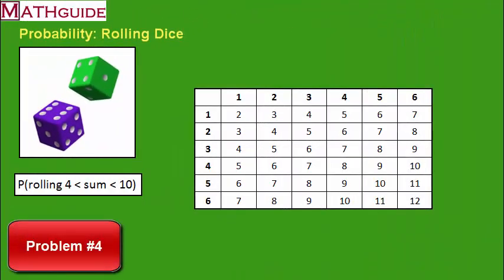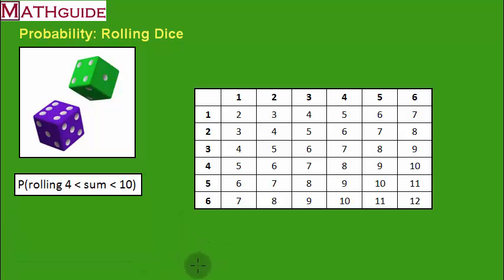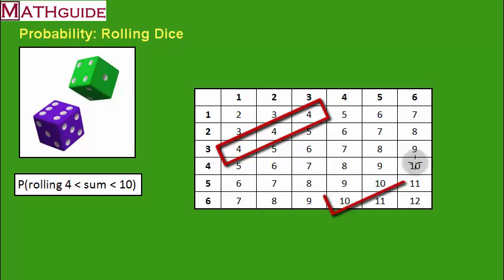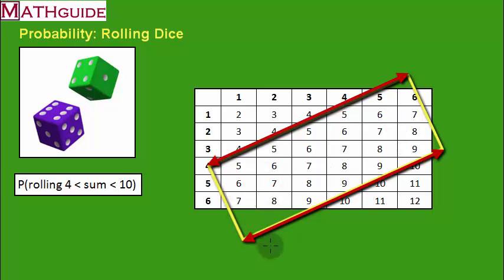Here's our fourth problem. We're going to figure out the probability of rolling a sum that's greater than 4 but less than 10 — in other words, all the sums between 4 and 10, not including 4 and 10. You can see where the sums equal to 4 are — those three values — and where the sums equal to 10 are — those three values. I want everything in the band between these two parallel diagonal lines.